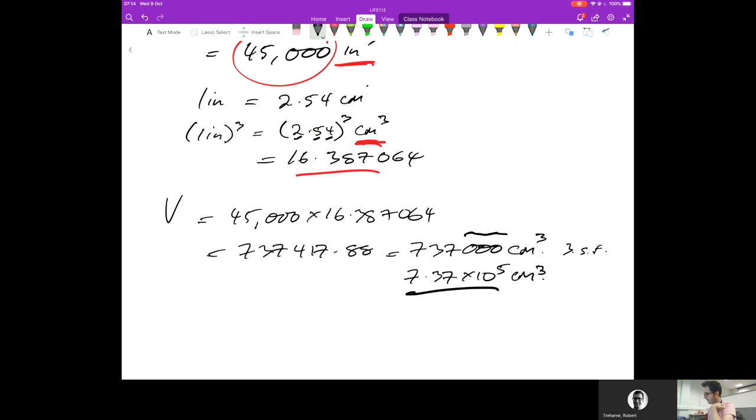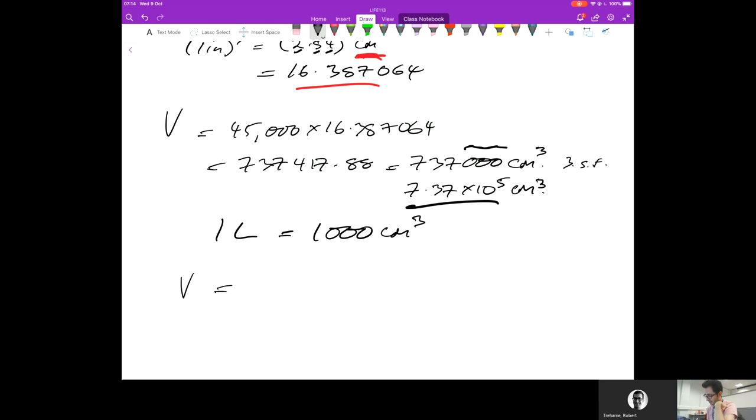I could rewrite that as 7.37 times 10 to the 5 centimeters cubed, and that's explicitly three significant figures. That's great, but it's still not in liters. One liter equals 1,000 centimeters cubed. So this volume in liters is 7.37 times 10 to the 5 divided by 10 to the 3. I can subtract the indices: 5 minus 3 gives me 7.37 times 10 to the 2 liters, or 737 liters. That's about right, it's a big tank.